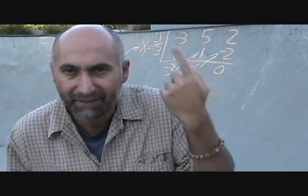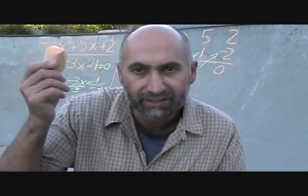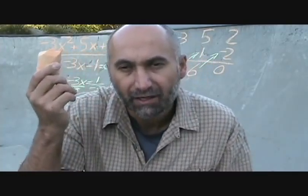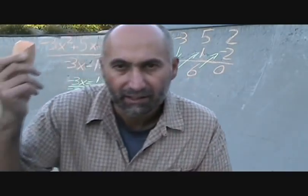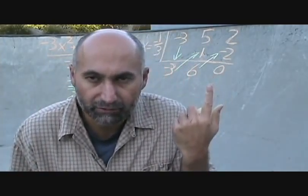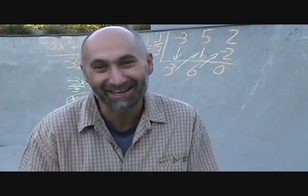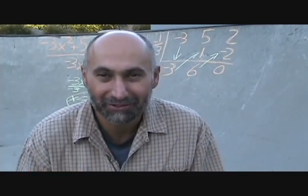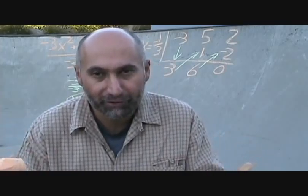A remainder of zero means that the divisor is a factor of the numerator polynomial. If we substitute X equals negative 1 over 3 into the numerator, the result is zero — meaning this is an X-intercept, where the graph crosses the X-axis and Y equals zero. This connects back to polynomial long division and factoring.